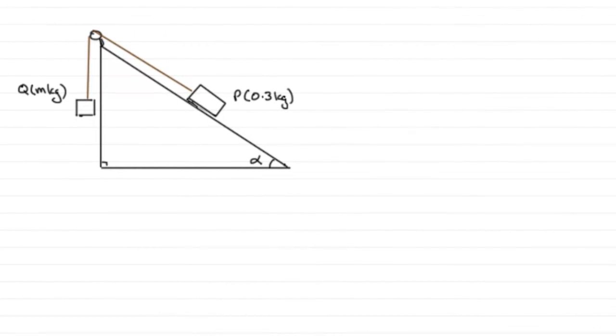Now, for this part of the question, what I've done is sketch what we're given. And we certainly need to add to this diagram. So just to recap, we've got our two particles then, P mass 0.3 kilograms and Q with a mass of m kilograms, and they're attached by this light, inextensible string passing over a smooth pulley. And particle P is moving up this rough plane.